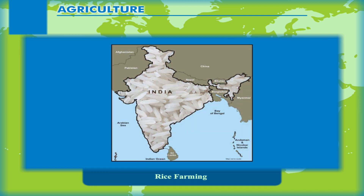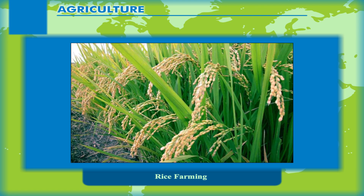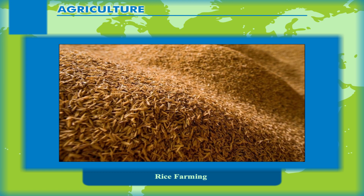Rice Farming: Rice was grown in India more than 5000 years ago. It perhaps originated from India and spread to other parts of the world. Rice is obtained from paddy, which is processed in mills. Bran and husk are used as fodder and also as fuel.